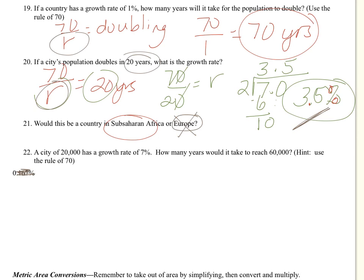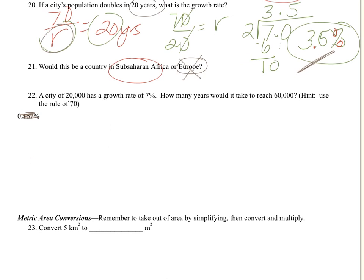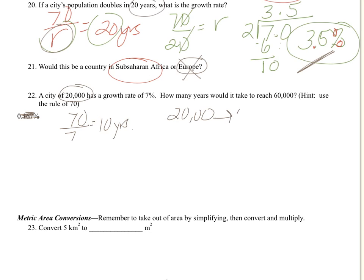22, a city has a growth rate of 7%. How many years would it take to reach 60,000? So once again, we're going to use the rule of 70. It has a growth rate of 7%. So 70 divided by 7 equals 10 years. So it starts out at 20,000. So 20,000 goes to 40,000. And then we double it again to 80,000. So it's doubling, not just adding another 20. That's where a mistake that students would make is they would just assume that it doubles to 60, but it doesn't. It's going to double and then double and then double. So it's going to go to 40 to 80.